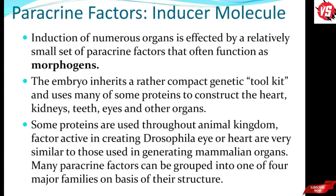Next are paracrine factors. Inducer molecules work here. Induction of numerous organs is affected by a relatively small set of paracrine factors that often function as morphogens. Embryos inherit a rather compact genetic toolkit and use many of these proteins to construct the heart, kidney, teeth, eyes and other organs. These factors are used throughout the animal kingdom — factors active in creating the Drosophila eye or heart are very similar to those used in generating mammalian organs.